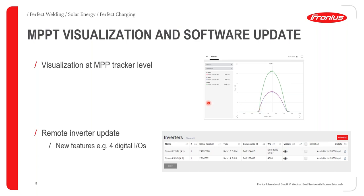Remote inverter updates are also possible. In settings under components, if an update is available — for example a 2018 update for digital input/output ports — you don't need to visit the site. You can simply log on to SolarWeb and perform the firmware update on your inverters remotely.